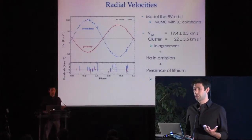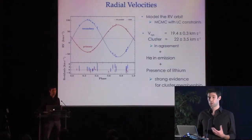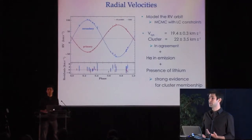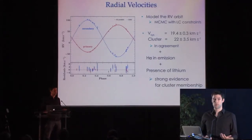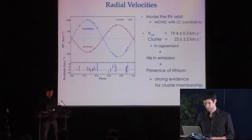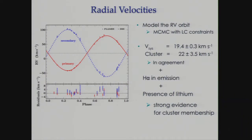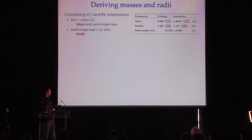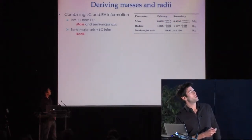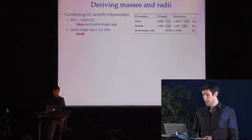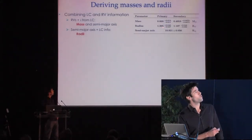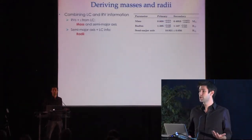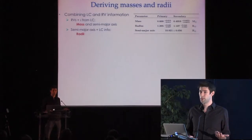In addition, we see that H-alpha is in emission and there's also lithium absorption, which we take as strong evidence for cluster membership and that the system is young. We now have all the information needed to solve for the fundamental parameters. The masses tell us we're dealing with a 0.7 and a 0.5 solar mass system, and the radii are relatively large compared to their masses, indicating low-surface-gravity stars — and in this case, that they're young.